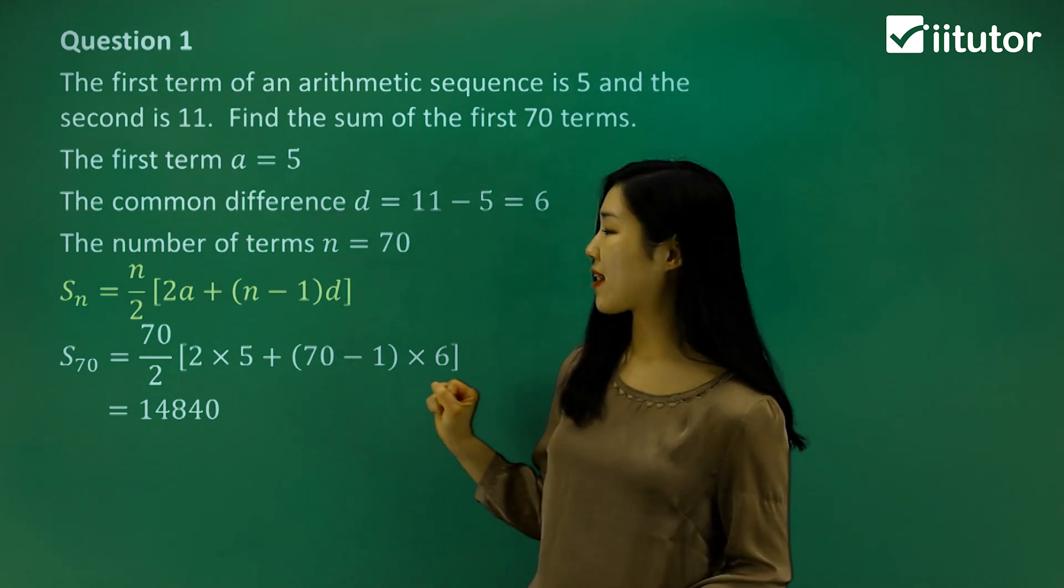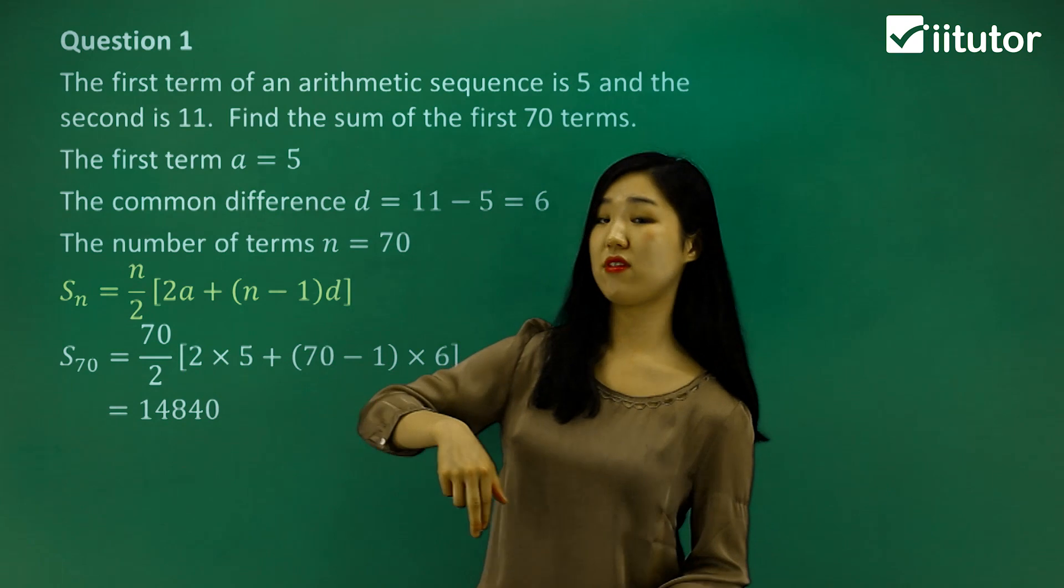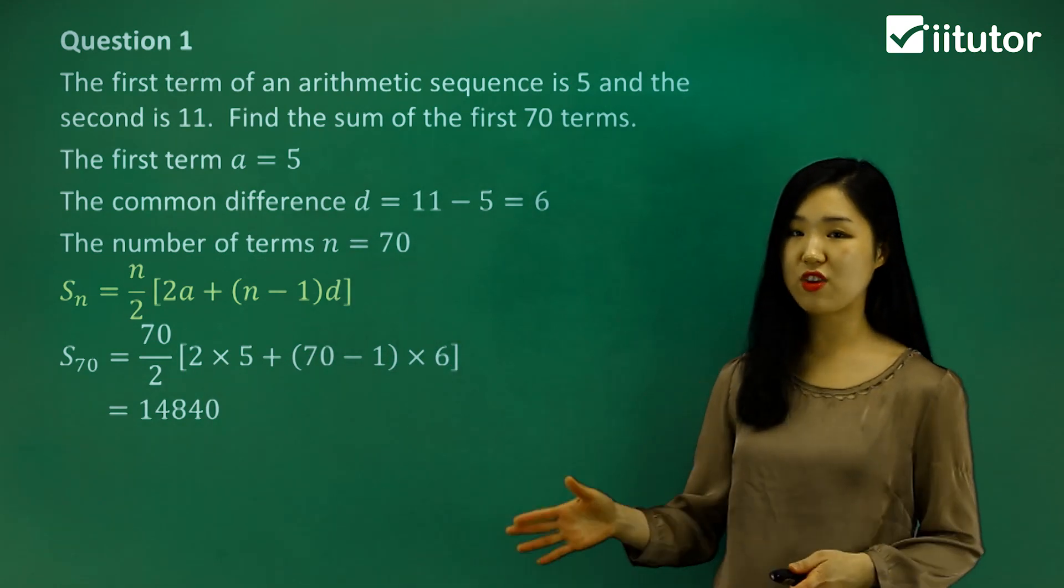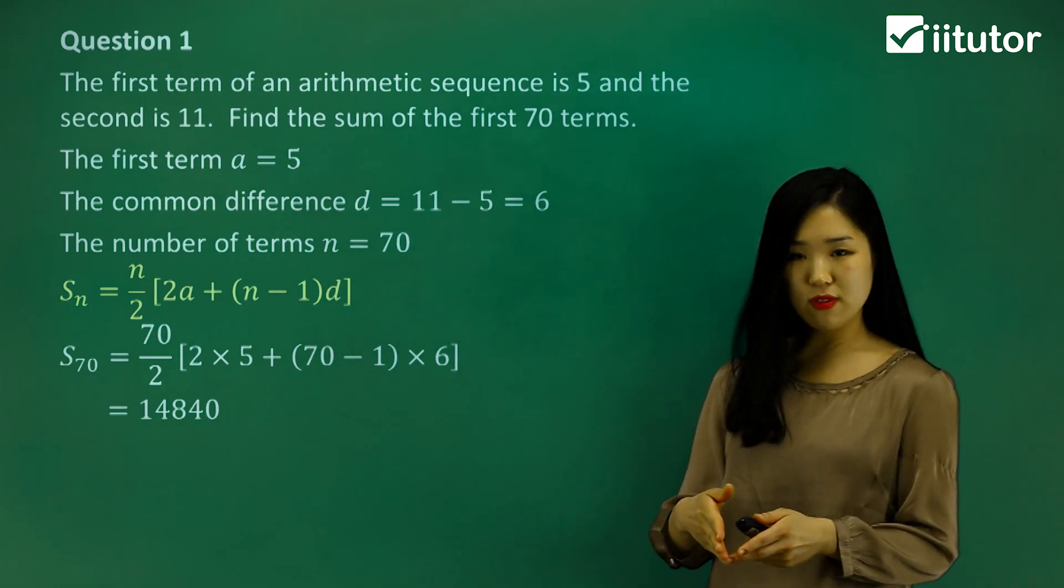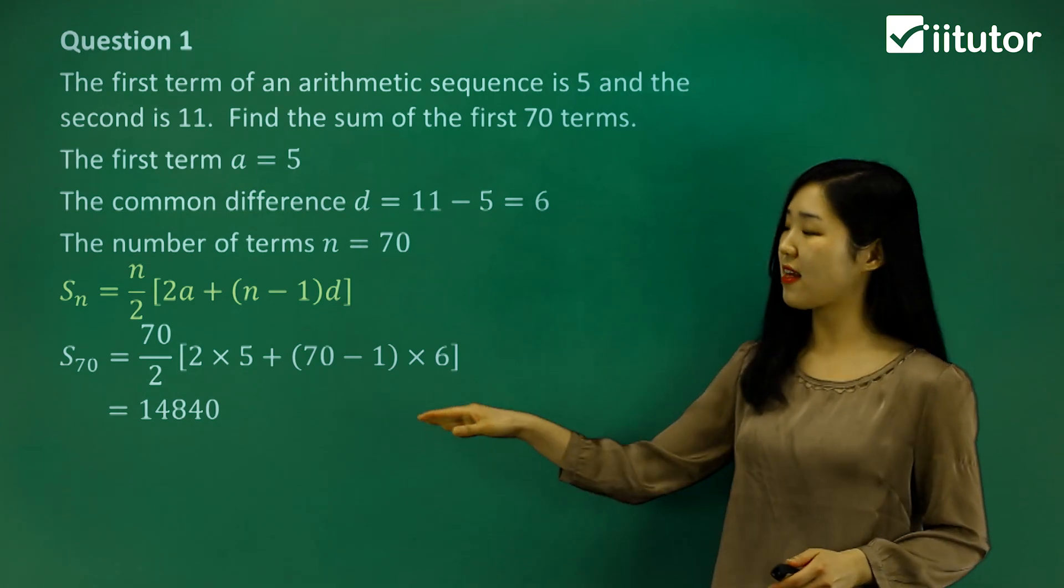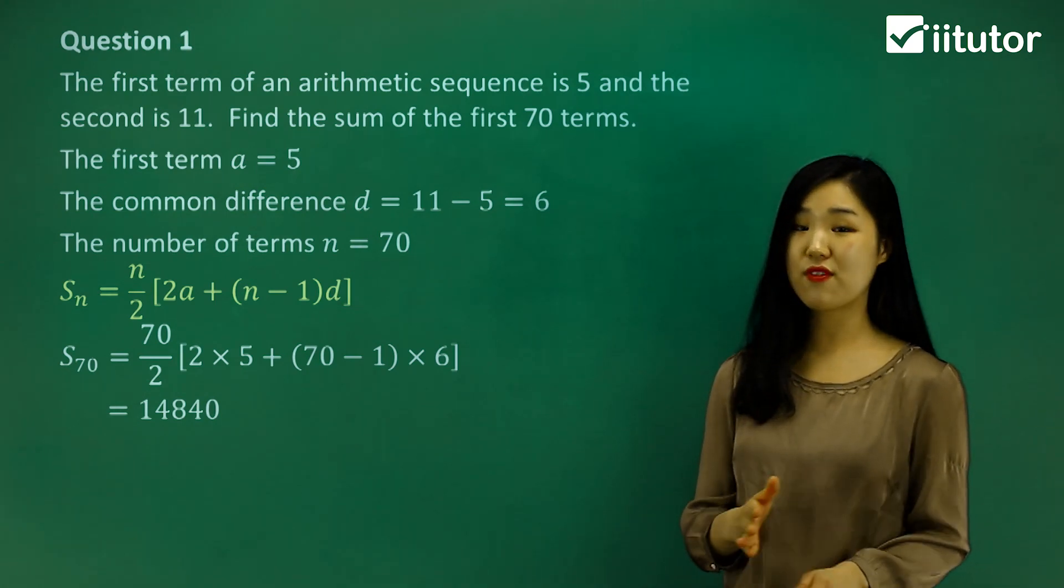You just simplify the calculation. I'm assuming you should be able to do this by yourself. Make sure you do the brackets first, all the brackets first. And then you multiply 70 divided by 2, which is 35, and then you multiply it. So work from the inside out, be very careful. And that's something you should get. So that's the sum of the first 70 terms.